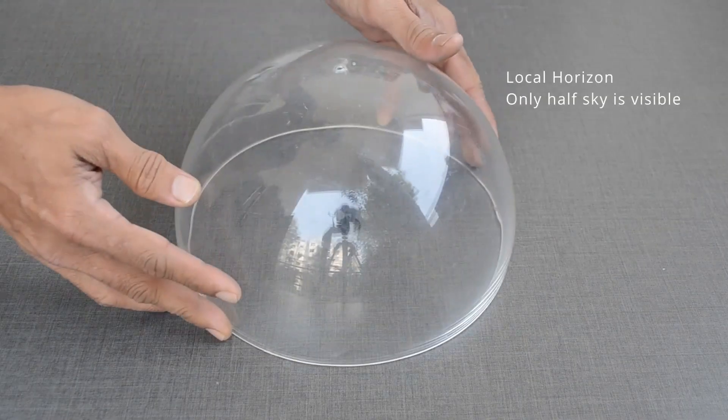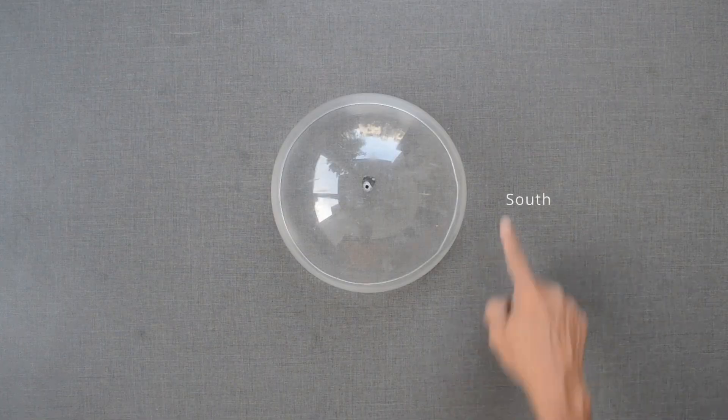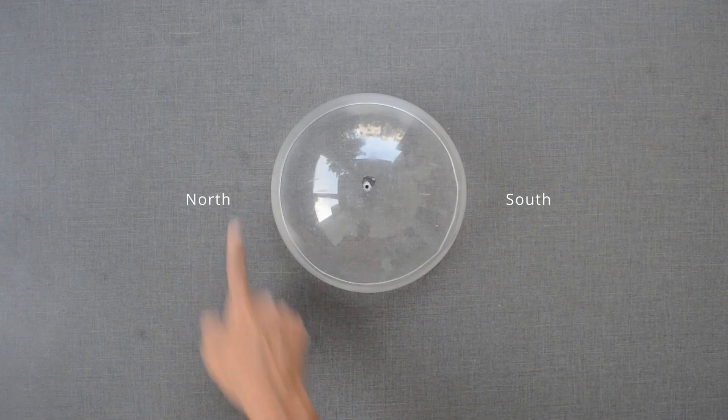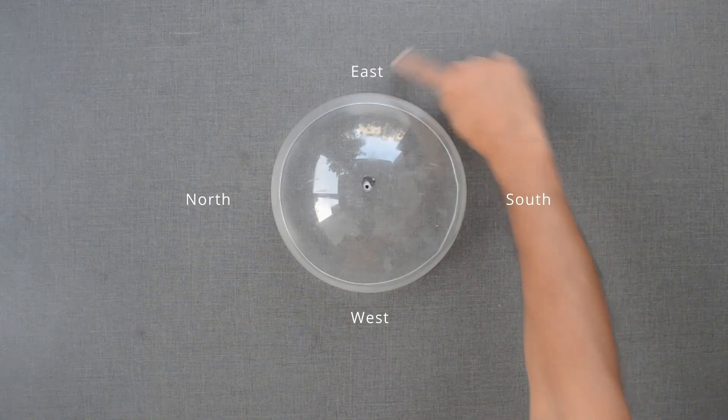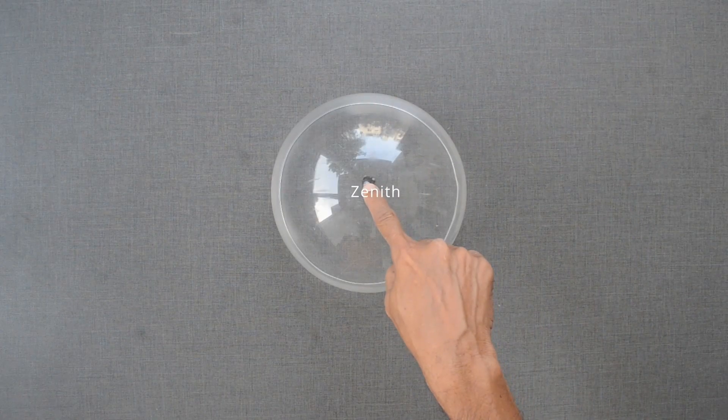For a person standing on the ground, this sphere represents a local sky. This is south, this is north, west and east. This point will be zenith.